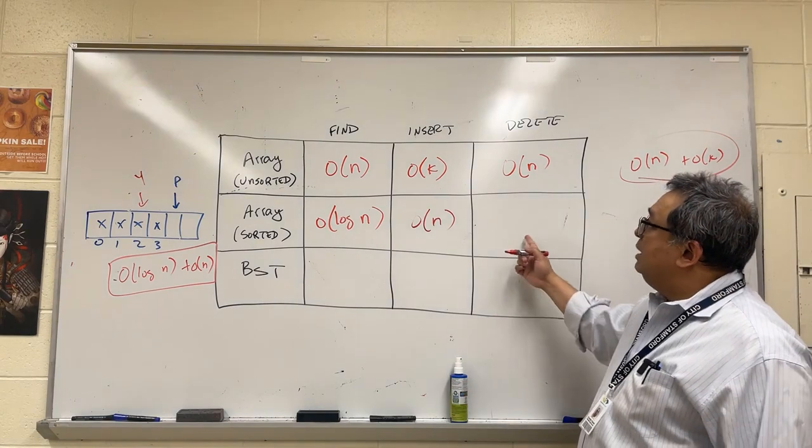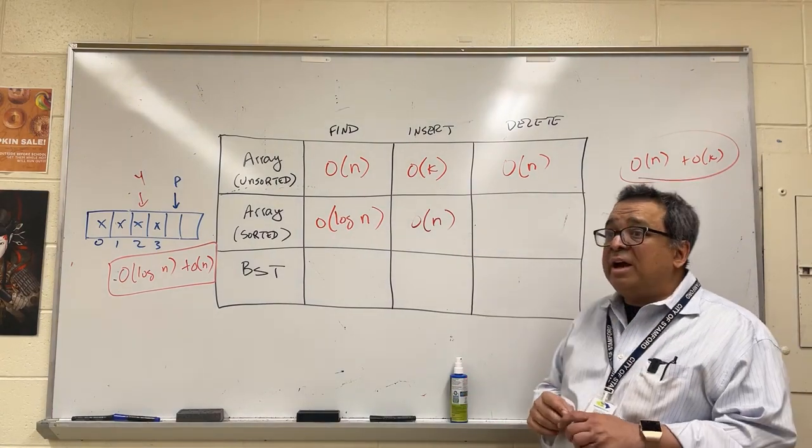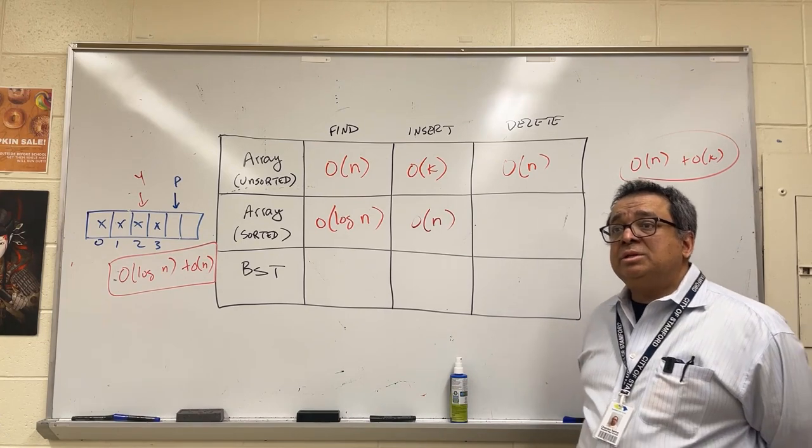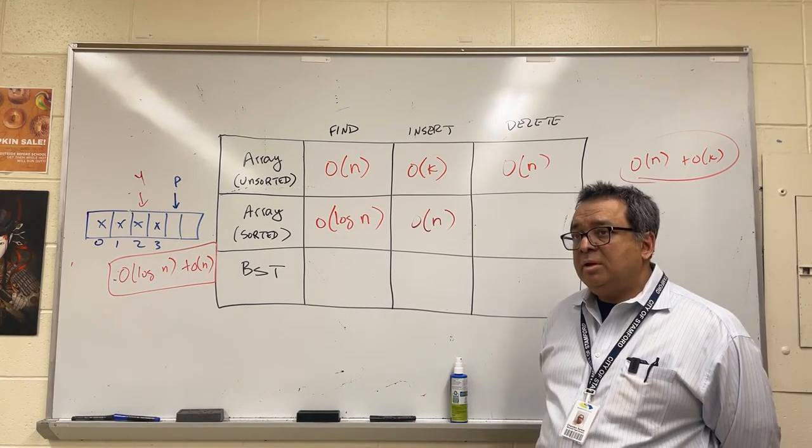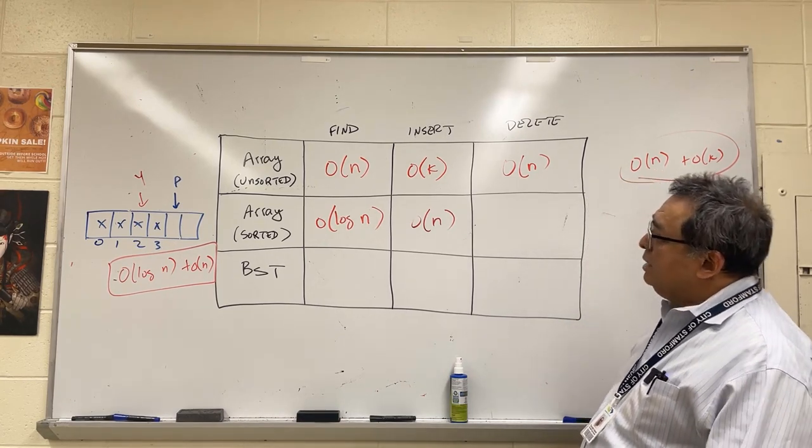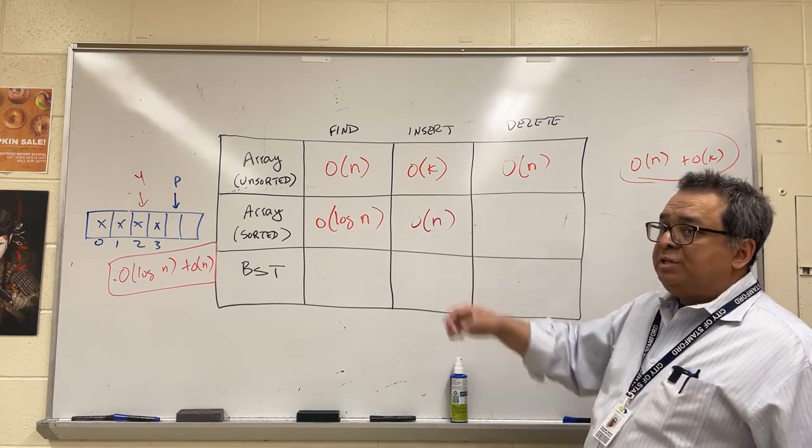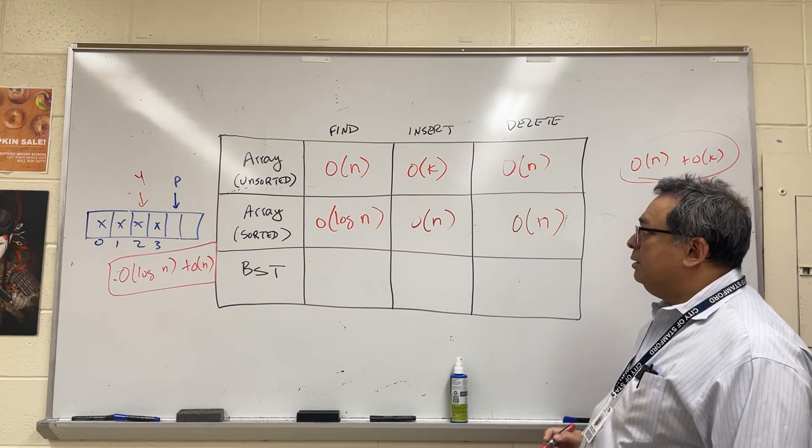And likewise, the delete is extremely similar. It's going to take me how long to find it and how long to do the deletion. How long to find it? I do the bisection search. To delete it, you have to delete it and then you have to move everything else. And to delete it, I have to shift everything over to the left. So once again, this is going to be O of n.